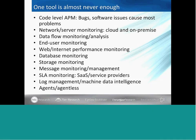End-user monitoring is very important. You can have all the best back-end metrics in the world, but if you don't exactly know what your user is seeing and experiencing, you're not really closing that loop — especially with people accessing different devices, particularly mobile. Web and internet performance monitoring is about understanding the experience in different geographies — what sort of latency there might be and how good a connection they have. Database monitoring is a niche within application performance monitoring, but still very important because so many applications today are data heavy and making a lot of database calls — a very common place where applications trip up.